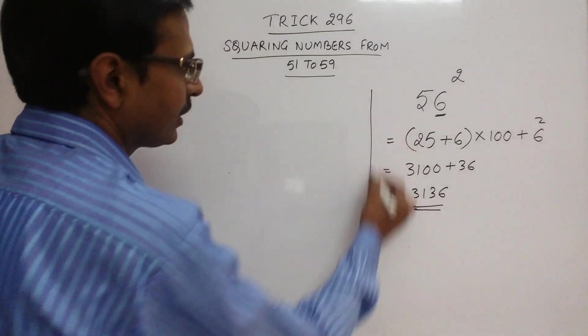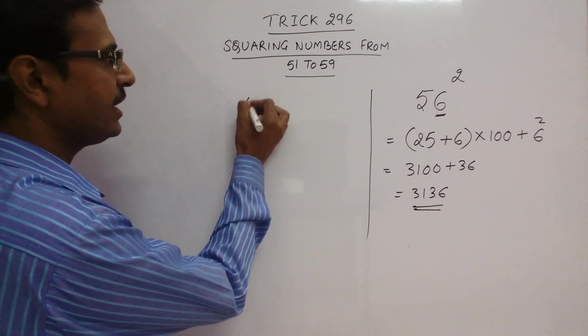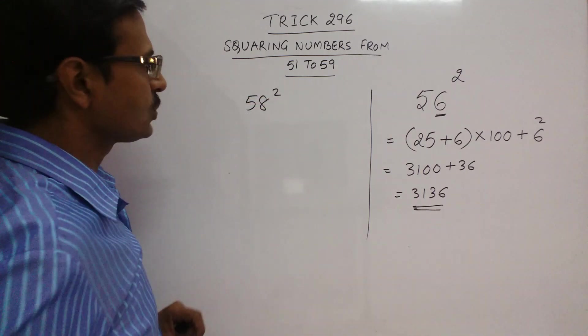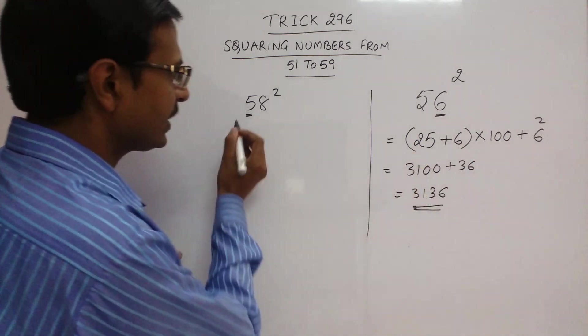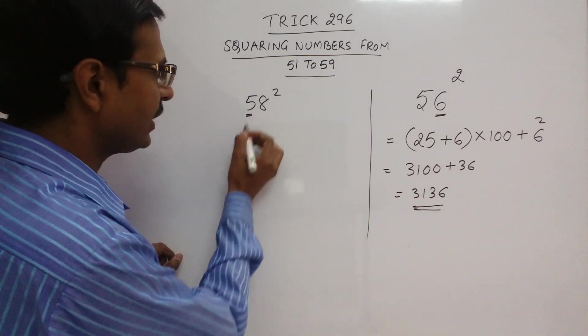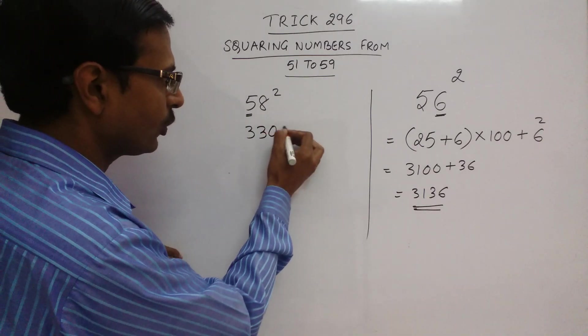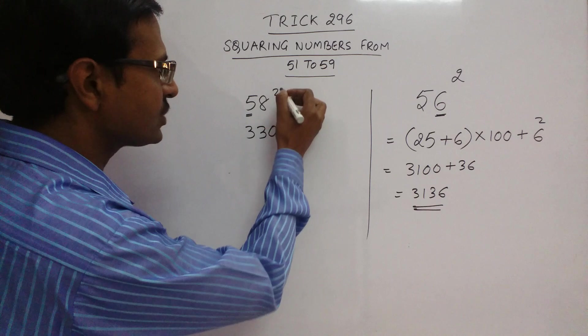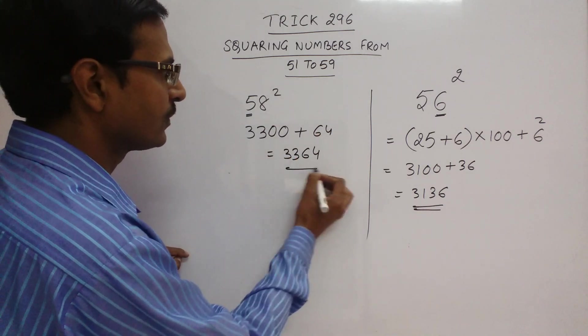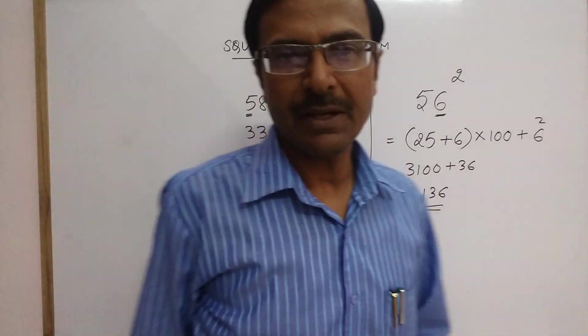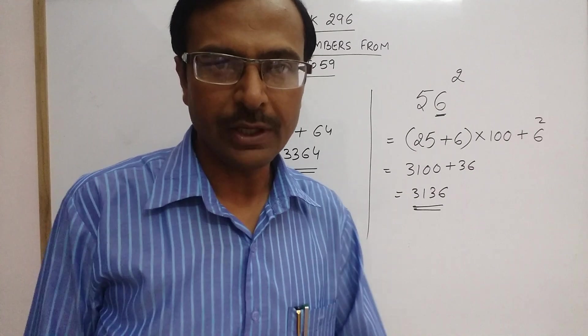Let us take one more example to understand this method better. Say we have 58 square. I will not write all the steps now. 5 square is 25 plus 8, that's 33, followed by two zeros, and add 8 square which is 64. So your answer is 3364. No traditional multiplications, you get the answer in just 2 seconds.